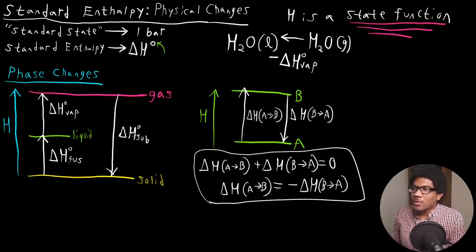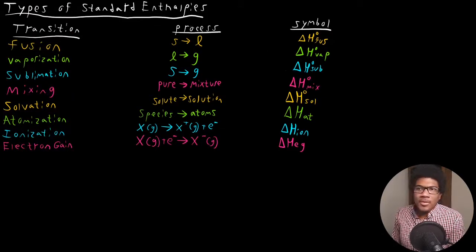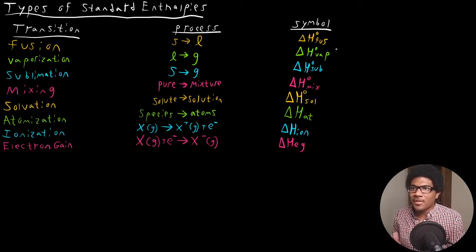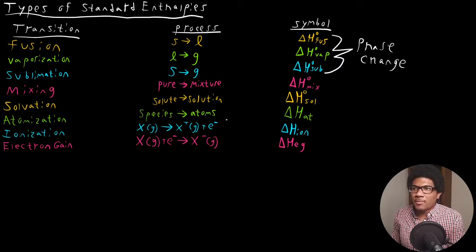The last thing I want to show you for this video is that there are a bunch of different types of standard enthalpies. Like I said in the beginning, it doesn't just deal with phase changes. There's enthalpies associated with a lot of different processes. Obviously you do have phase changes, so these three are your standard enthalpies for phase changes. But we have other atomic and molecular processes that have associated standard enthalpies. This isn't even a fully exhaustive list, but these are a few that you should be familiar with.